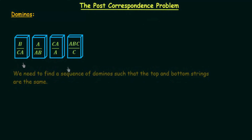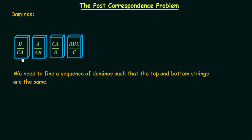Our task is to find a sequence of dominoes such that the top and bottom strings are the same. We need to arrange these dominoes so that combining the symbols on top and combining the symbols on the bottom gives the same string. The rule is that you can arrange the dominoes in whichever way you want, and each domino can be used any number of times. We need to find a finite sequence such that the top and bottom strings are the same.